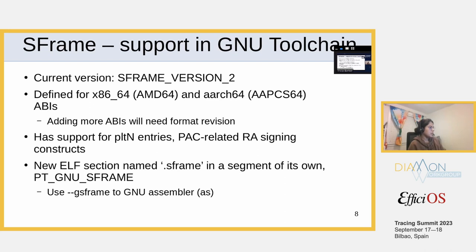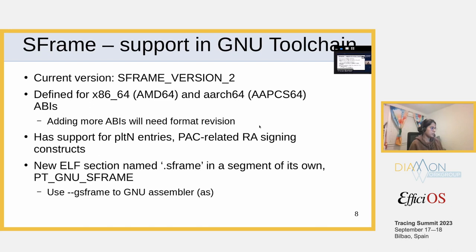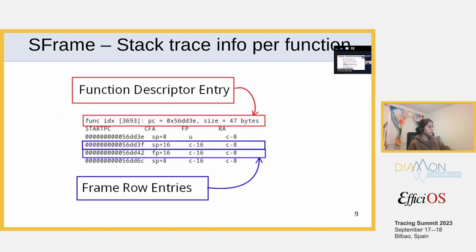On the ARM64 side, there is support to represent return address signing and whether signing is done with key A or key B. For PLT entries, there is a specific representation so that the overall stack trace information in the format is not bloated — PLT entries are very well-defined with repeated instructions. When present, SFrame data is in a section of its own, .sframe, in a segment identifiable with PT_GNU_SFRAME. To generate SFrame information, pass --gsframe to the GNU assembler.